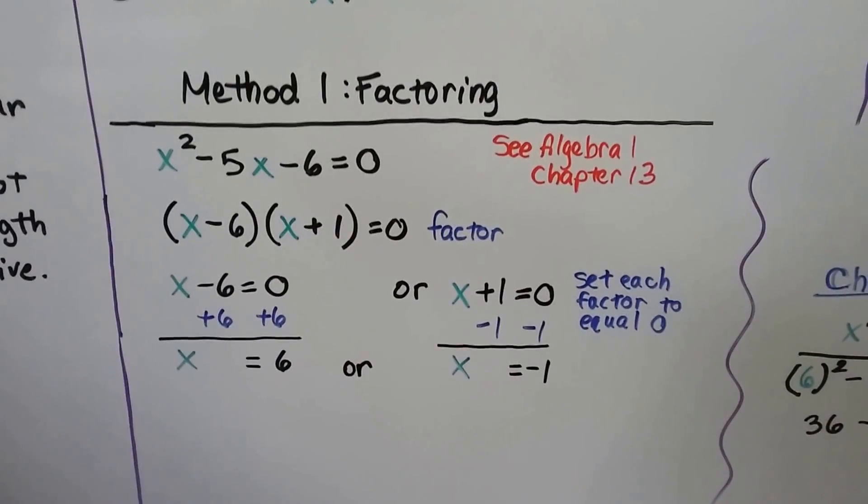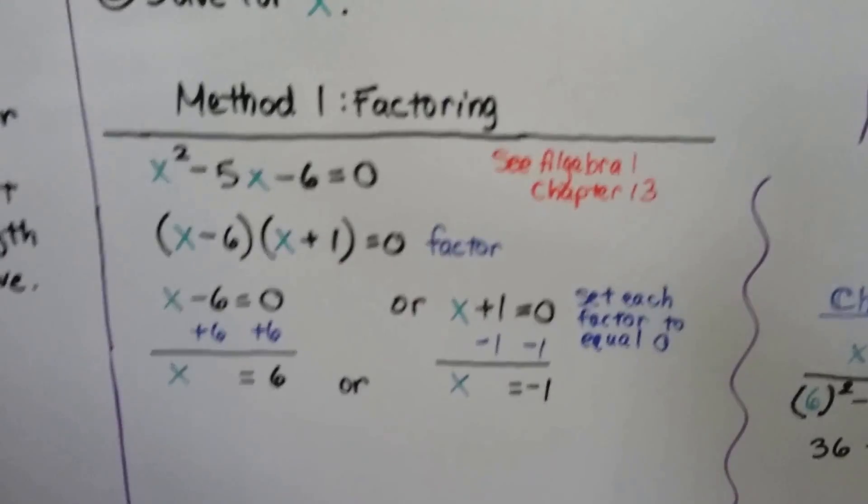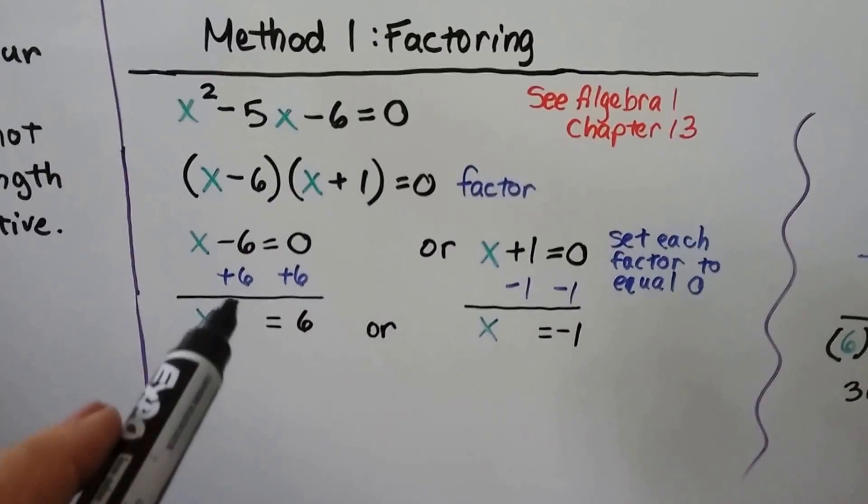Then we set each factor to equal 0. So we've got x - 6 = 0, and x + 1 = 0. And we solve for x.